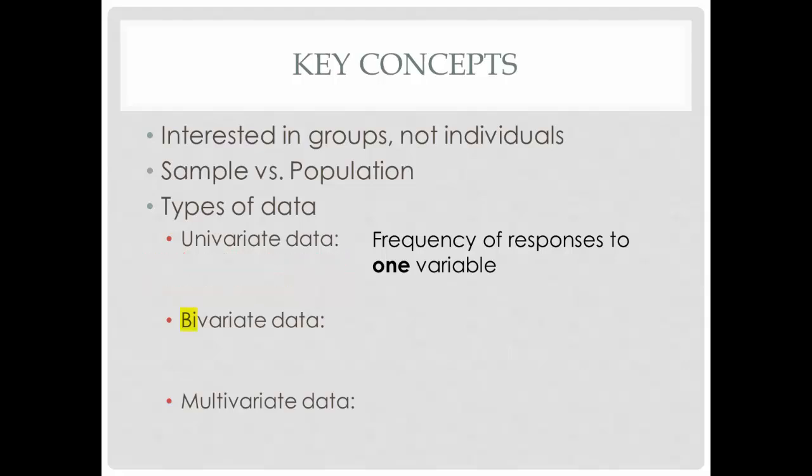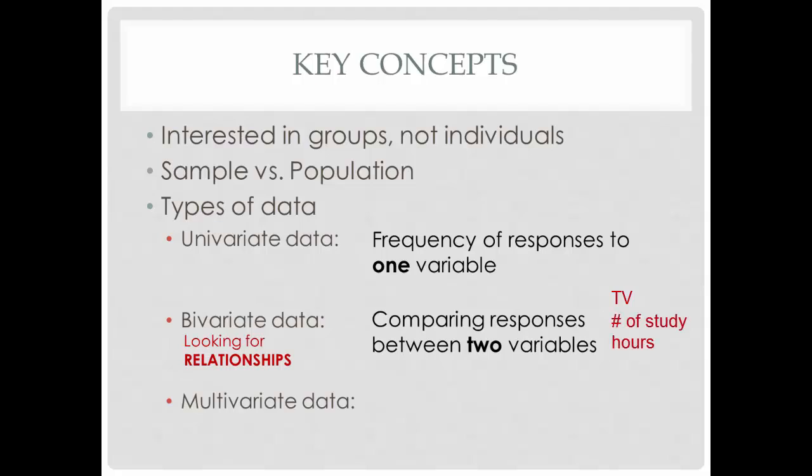Bi means two, so bivariate data is when you are comparing the responses between two variables. You are looking for relationships between those variables. In our example, we might wonder if the presence of a television in the home is related to the number of hours a student studies, or if the number of study hours is correlated with grade satisfaction.